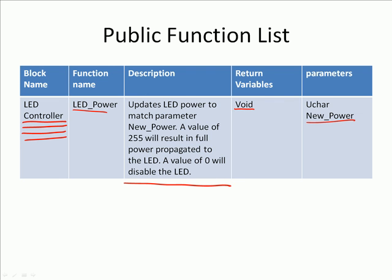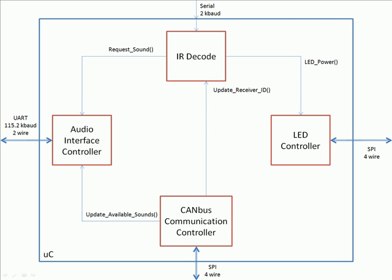What happens if something changes? If LED controller suddenly changed its interface — for example, switching to an SPI connection instead of its current connections — that would greatly change the inner workings of LED controller. But IR decode still only sees LED power. That's because LED power is decoupling IR decode from LED controller. LED controller might now be sending SPI data to control a microchip instead of controlling an analog circuit. But when you call LED power with a value of 255, LED controller will make sure that happens.